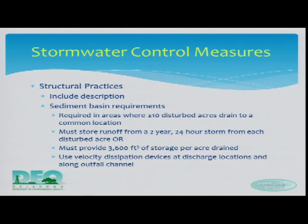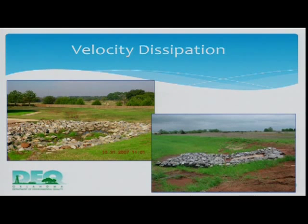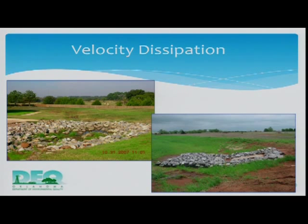The two bullets in the middle tell you what's required to have engineers help you — a two-year, 24-hour storm based on the depth duration frequency tables by USGS. Or you can provide 3,600 cubic feet per acre drain on your own and design that yourself without the aid of an engineer. Velocity dissipation is another pretty big deal. A lot of times you'll see rock covered up by sediment because as the water splashes across those rocks, it drops the sediment since it doesn't have the energy necessary to continue to carry it.